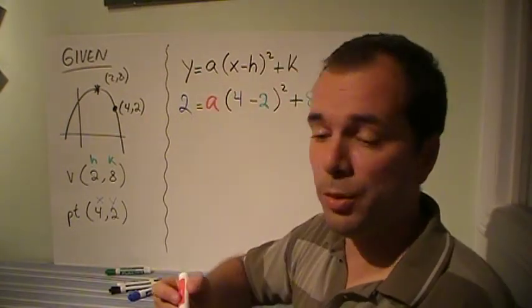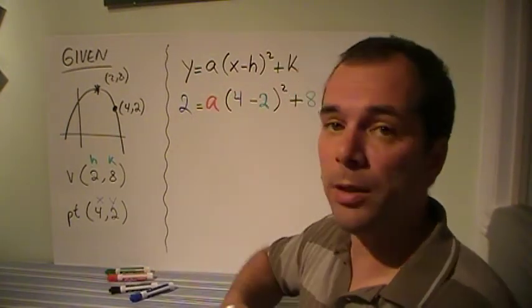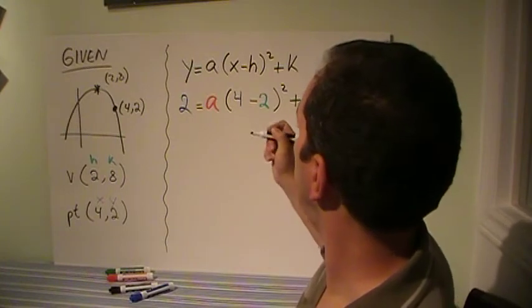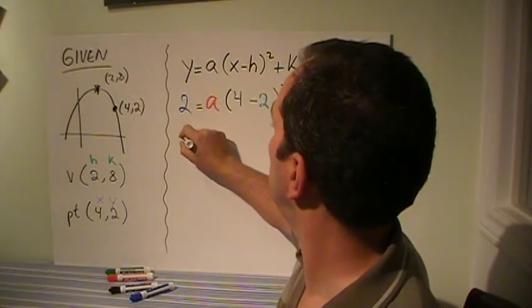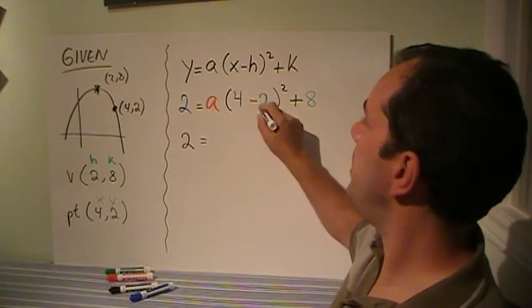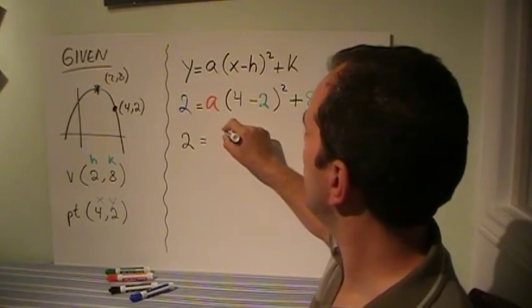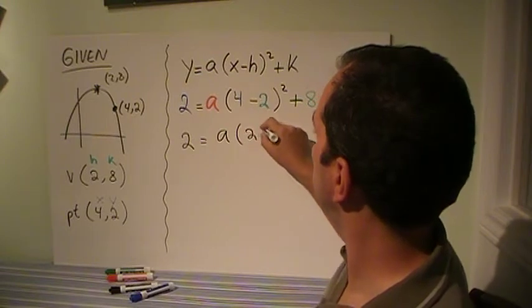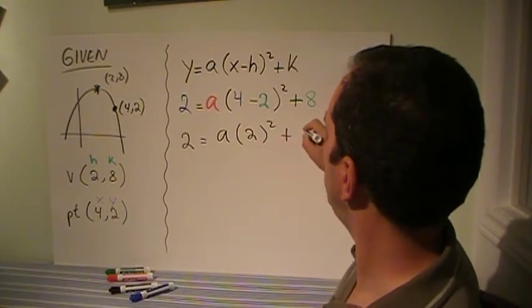And all we've got left is to figure out our a. And that's what we're doing. So I'm going to do everything just one color, and that is equal to 2 equals a(4 minus 2)² plus 8.